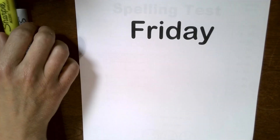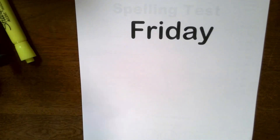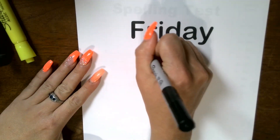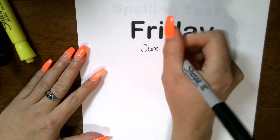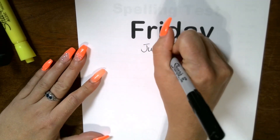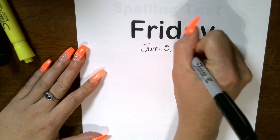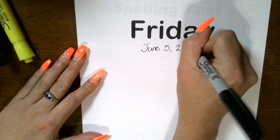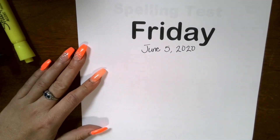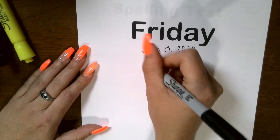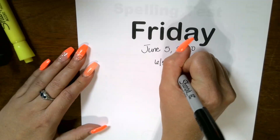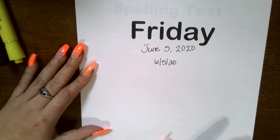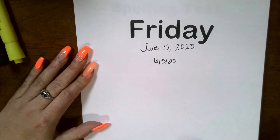Today is Friday, it's June 5th, so go ahead and make sure you have your June 1 through 5 packets. Turn to Friday, write today's date. Make sure you use a capital letter for the J, a 5 followed by a comma, and if you want to practice writing numerically with just numbers, that's how you would do it.